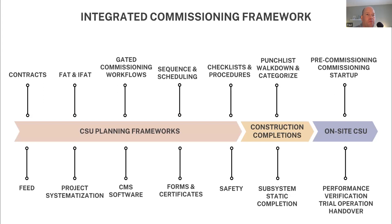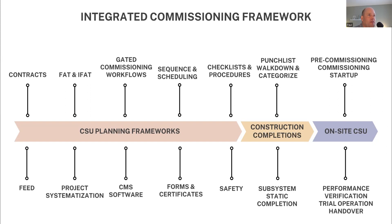The last framework is on-site commissioning and startup, with six project management frameworks required — covering pre-commissioning, commissioning, startup, performance verification, trial operation, and handover. These processes are tracked in commissioning management software so each subsystem progresses through workflows with sign-offs at each gated process.